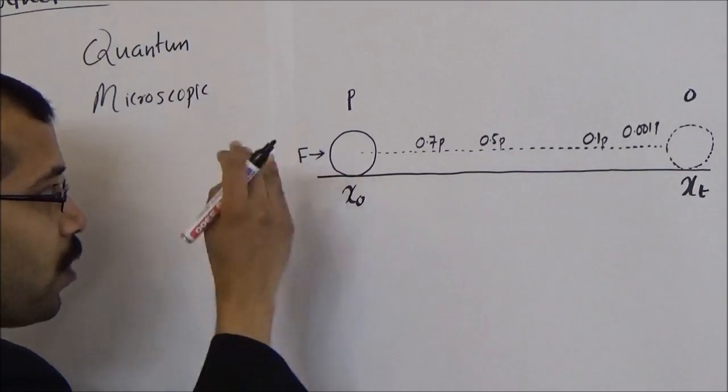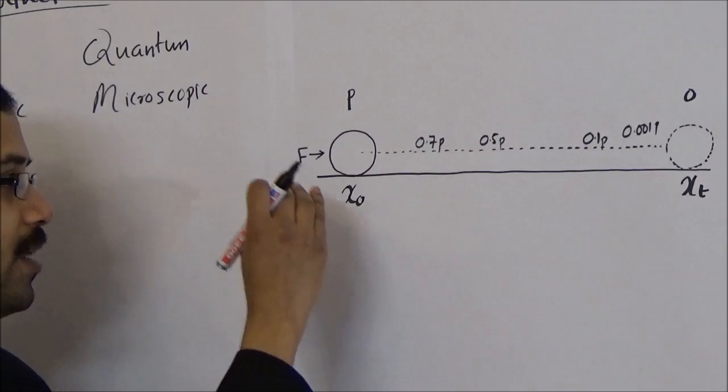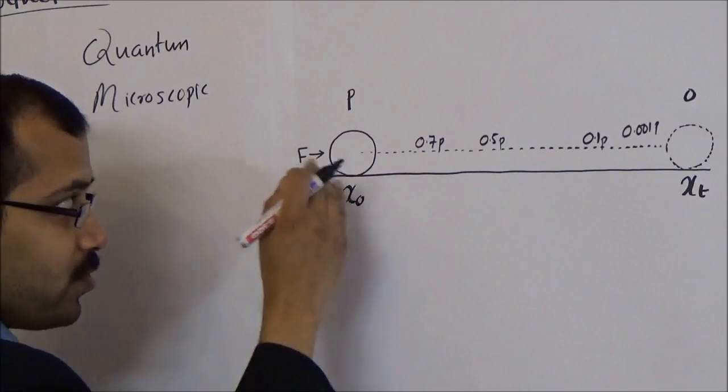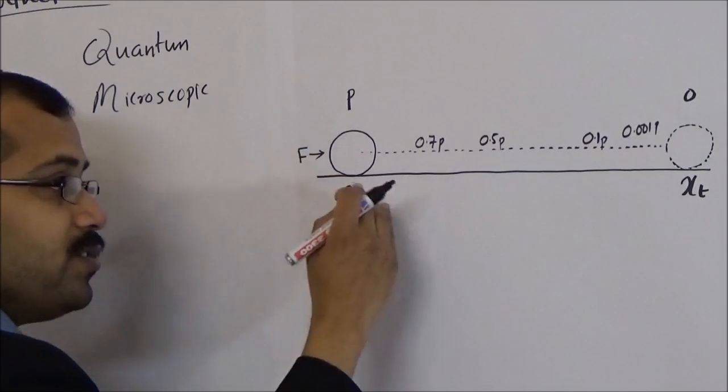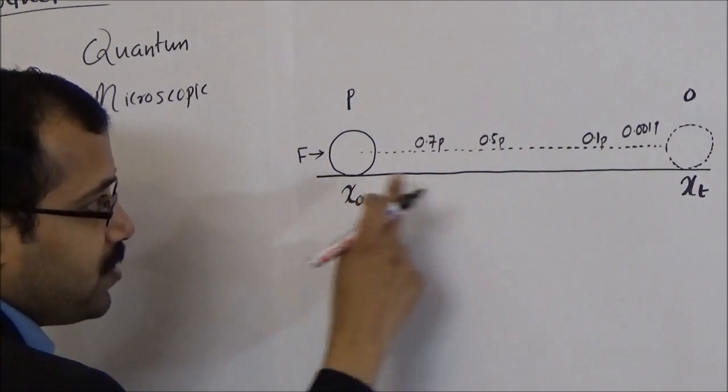The motion of this ball is governed by the laws of classical mechanics, and classical mechanics doesn't put any restriction on the values of this momentum. It allows continuous range of values for the momentum of this ball from the position x0 to xT.